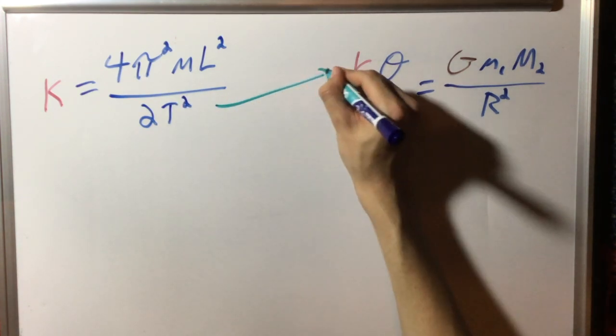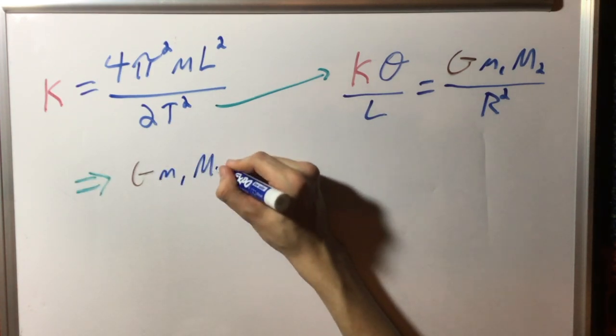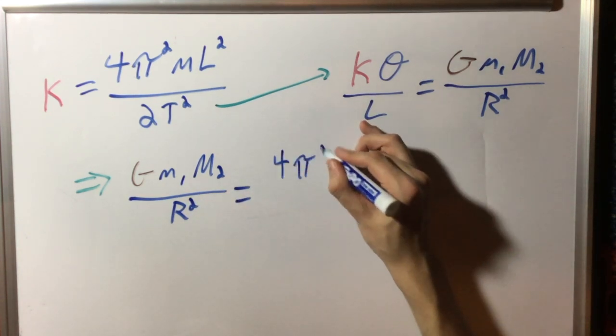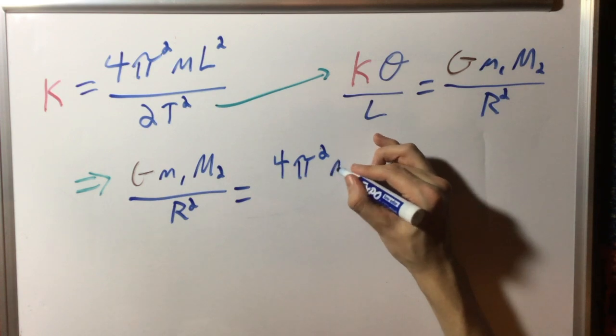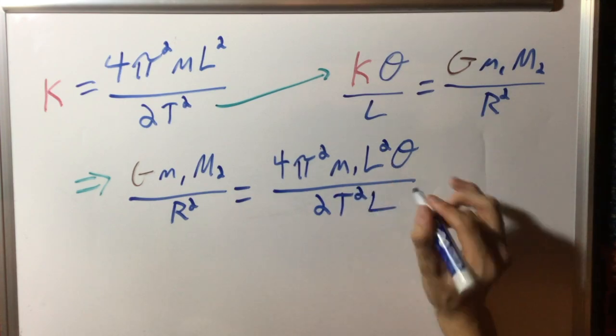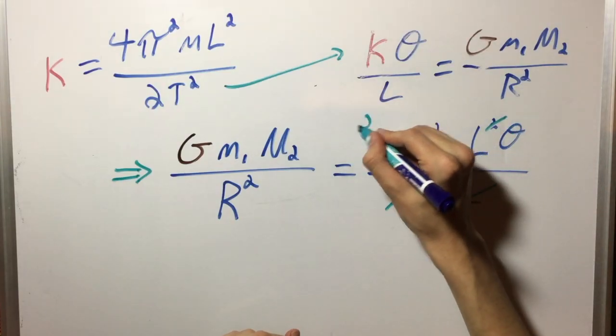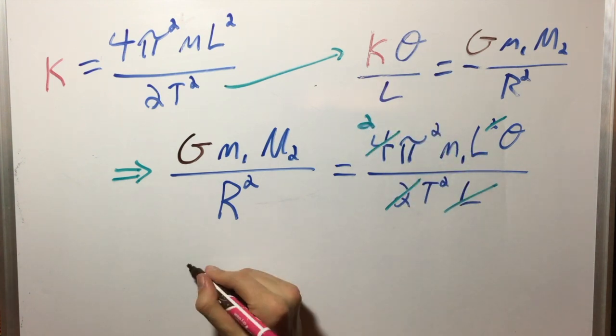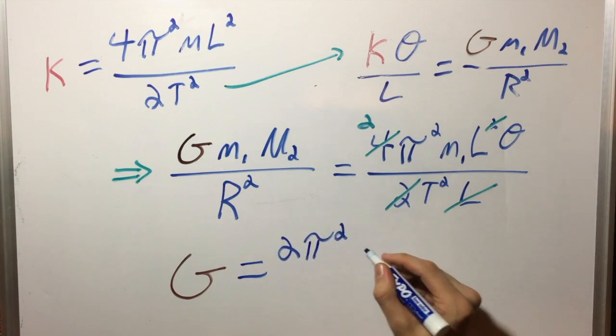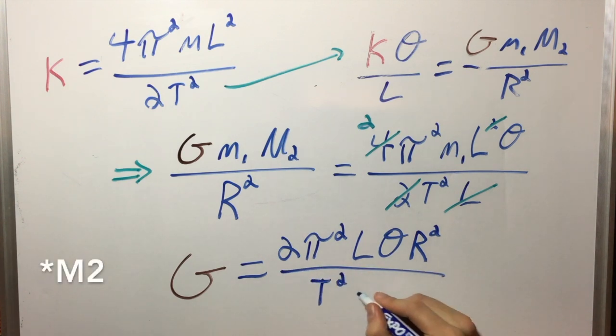And finally, plugging this value of kappa into our redefined gravitation equation, we get 4 pi M2L squared theta over 2T squared L is equal to GM1M2 over R squared. Sounds pretty complicated, right? When simplified, this equation simply becomes 2 pi squared L theta over T squared is equal to GM1 over R squared. Now, isolating G, we get G is equal to 2 pi squared L theta R squared over T squared M1.